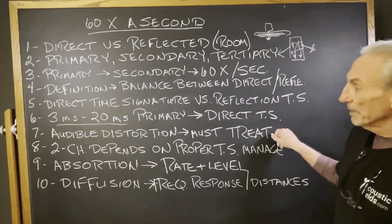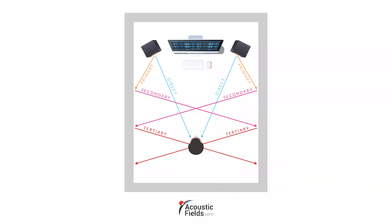Audible distortion, got to treat it. You can see in this graphic where we have primary, secondary, and tertiary reflections like we talked about in the room. You hear a lot about primary, but you don't hear about tertiary, the third one. You don't hear about secondary.